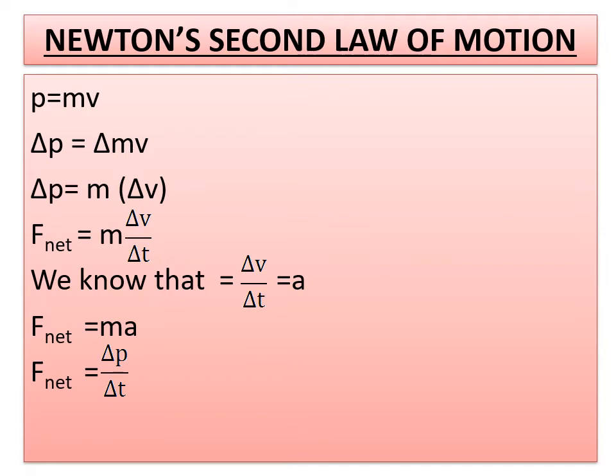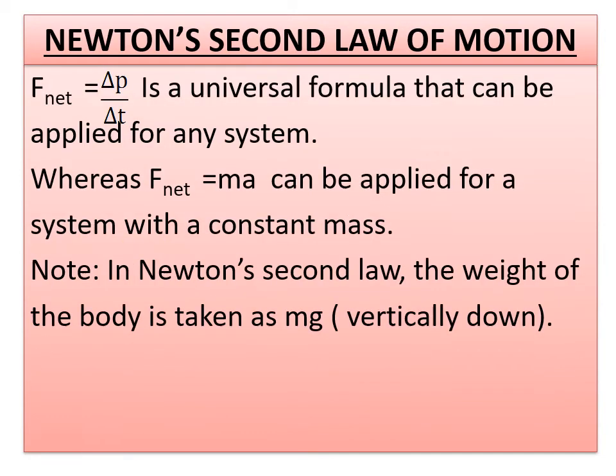F_net is equal to delta P by delta T also. We have to remember F_net is equal to delta P by delta T. It is a universal formula that can be applied for any system. Any system means here system means whenever you consider bodies or objects more than two, on the whole we call it as a system. So F_net is equal to delta P by delta T is a universal formula and it is applied for any system and this formula in numericals you have to remember.